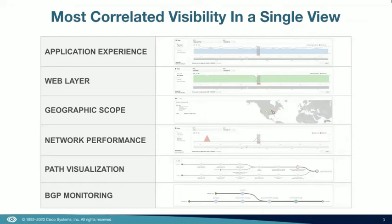When we talk about network performance, this is having visibility into all networks like they're your own, including those across the Internet — looking at things like loss, latency, and jitter across the entire end-to-end service delivery path. Path visualization capability provides a hop-by-hop view into how services are being delivered, including the performance of all ISPs that contribute to delivering that service, and the ability to drill into their network and identify specific nodes that may be disrupting service delivery.